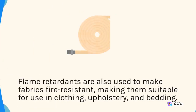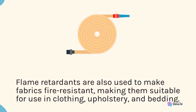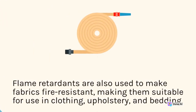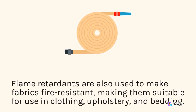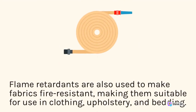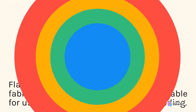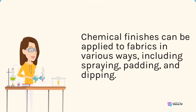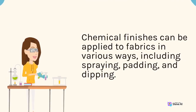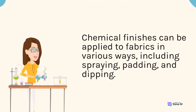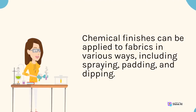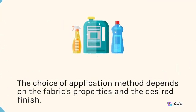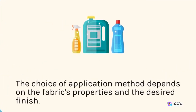Flame retardants are also used to make fabrics fire-resistant, making them suitable for use in clothing, upholstery, and bedding. Chemical finishes can be applied to fabrics in various ways, including spraying, padding, and dipping. The choice of application method depends on the fabric's properties and the desired finish.